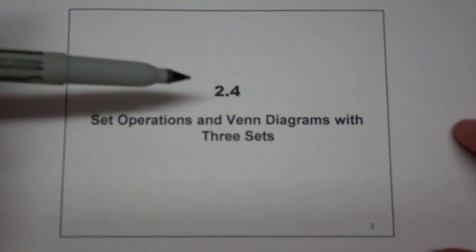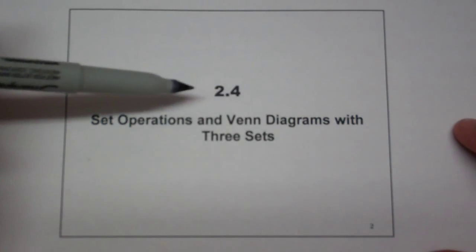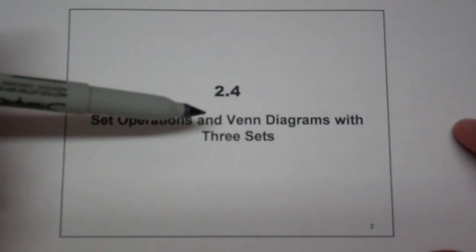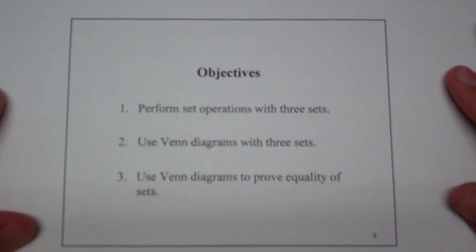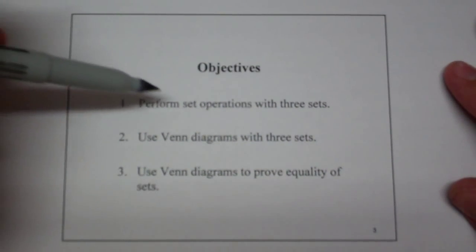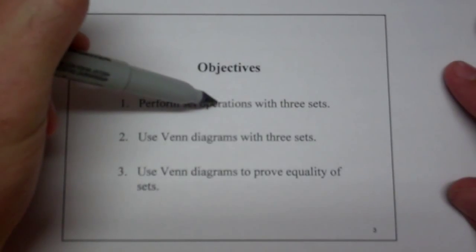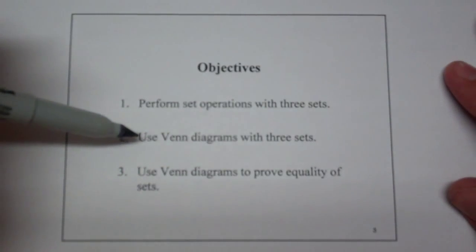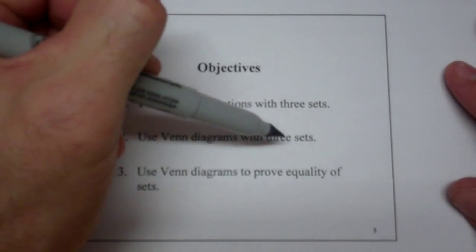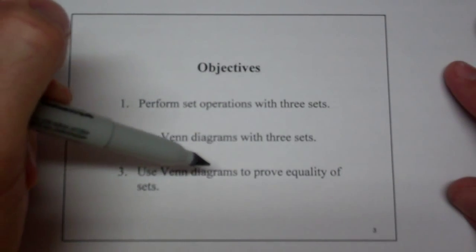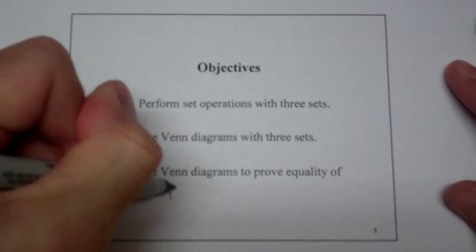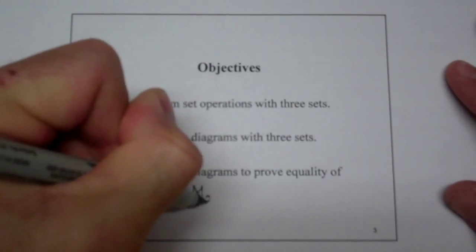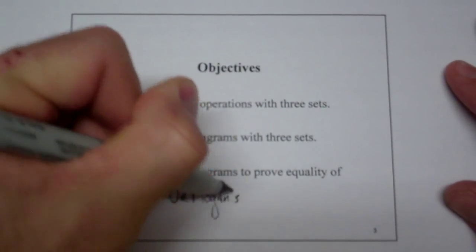Today we're looking at section 2.4, set operations and Venn diagrams with three sets. The objectives are to perform set operations with three sets, to use a Venn diagram with three sets, and to use the Venn diagram to prove the equality of sets, also known as DeMorgan's Law.